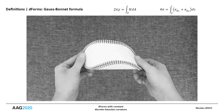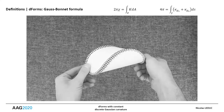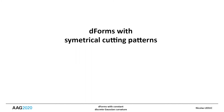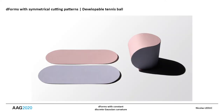Thanks to these geometrical and topological definitions, we are now equipped to investigate D-forms with constant Gaussian curvature, and in a first step, those with symmetrical cutting patterns. A trivial case meets immediately the constraints outlined just before: it is a D-form made of two identical cutting patterns, a kind of developable tennis ball.